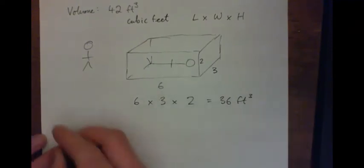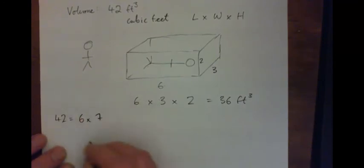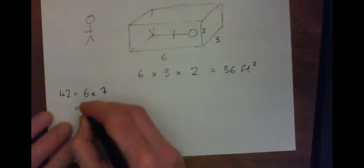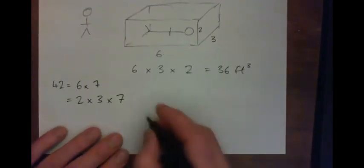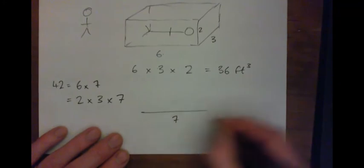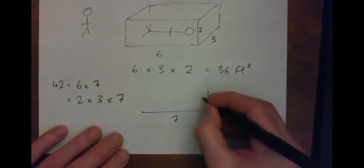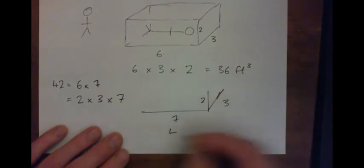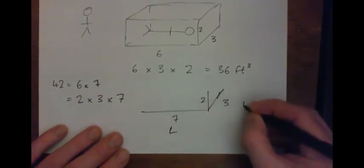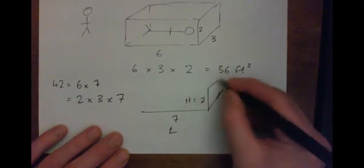And the other way to work it out is you can go, okay, 42 is six times seven. So that can be broken down to two times three times seven. So definitely a box that was something like seven times three times two. So a length of seven, a width of three, and a height of two feet should definitely do it as well, right?